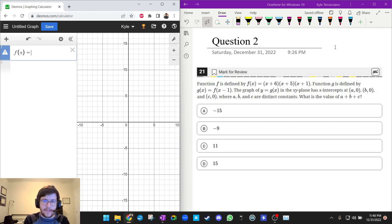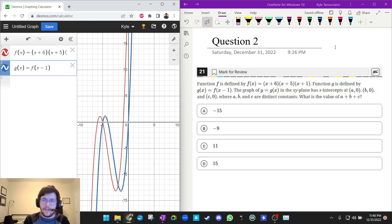Okay, once again, I'm going to type in my f(x). So (x+6)(x+5)(x+1). And now I'm going to type in g(x). And we only care about g(x), so why don't we go ahead and unhighlight f(x) so it doesn't distract us at all.